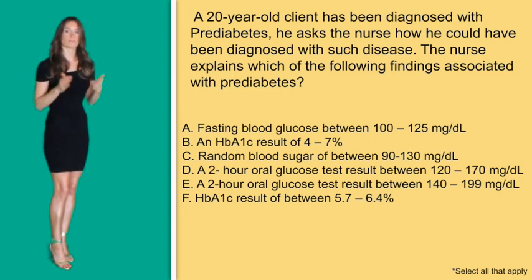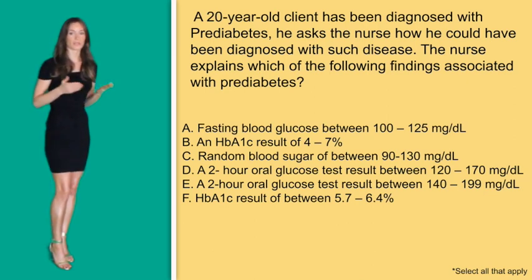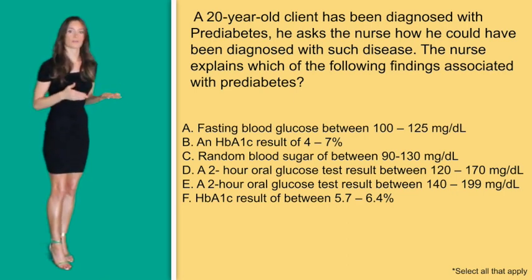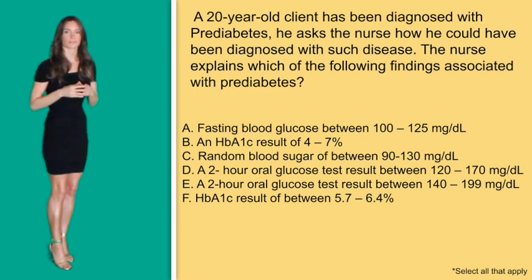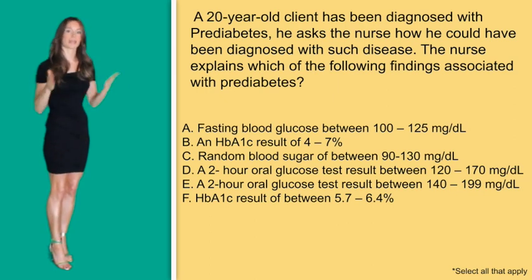Option E: a two-hour oral glucose test between 140 and 199. Again, with this test they check blood glucose several times after ingestion of the solution. However, this time the lowest level was 140, which is slightly high, making this answer option correct and a sign of pre-diabetes.